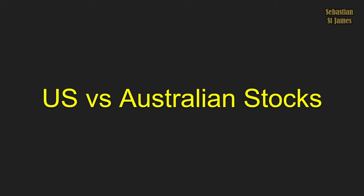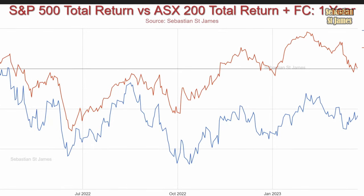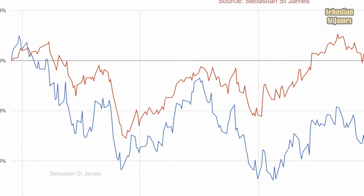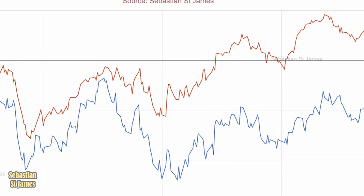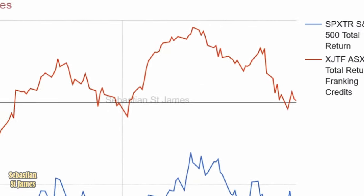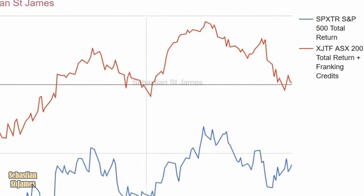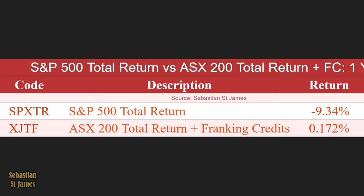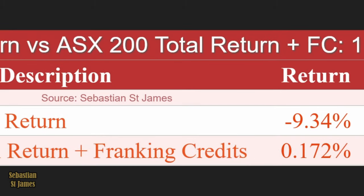US stocks versus Australian stocks — which one has the better return? This is the S&P 500 total return including dividends versus the ASX200 total return plus franking credits, over one year. The ASX200 has beaten the S&P 500. The S&P 500 total return is minus 9.34%, and the ASX200 with franking credits is positive 0.172%.